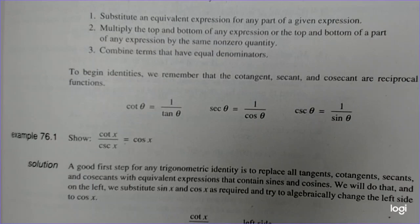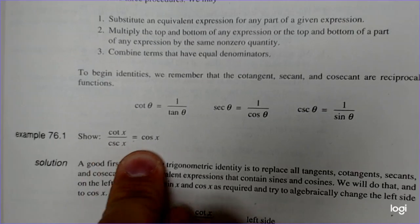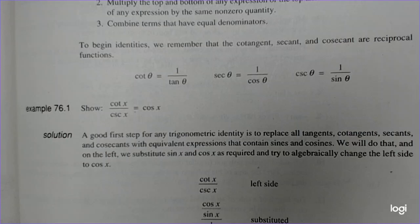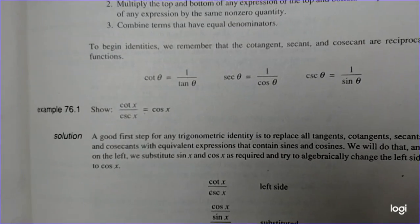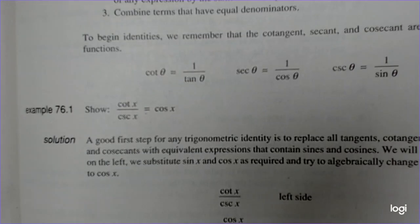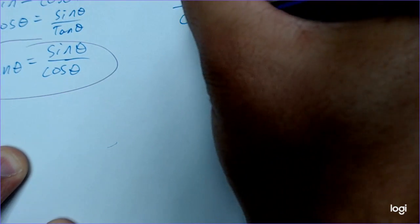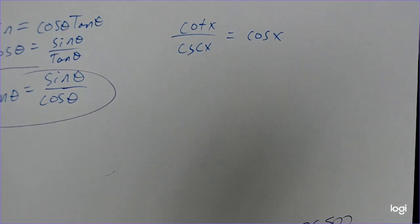Now we're going to do what's called rules of the game, where we rewrite trig identities until we arrive at the expression on the right side. The goal is to show that cotangent of x over cosecant of x equals cosine of x. You can use both the left and right halves of your paper for these problems since they can be quite long. We start by writing the original equation: cotangent of x over cosecant of x equals cosine of x, and then rewrite the left side using trig identities.